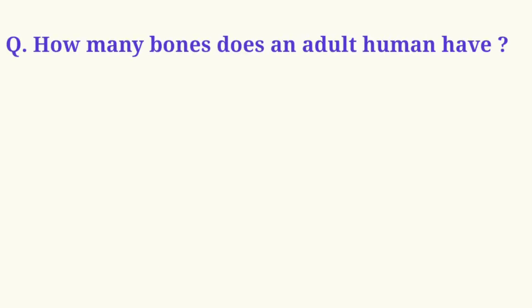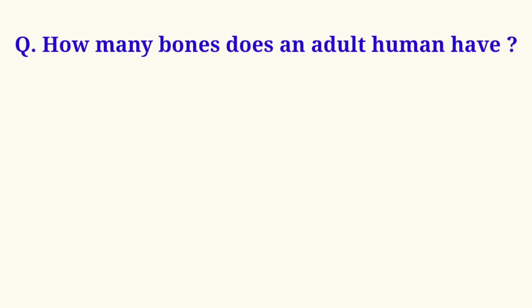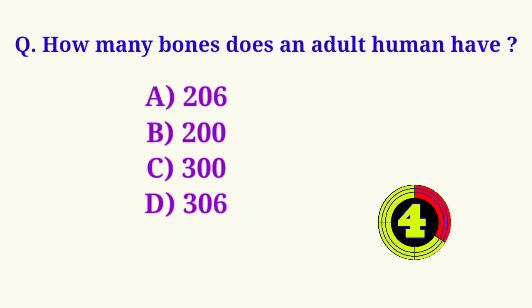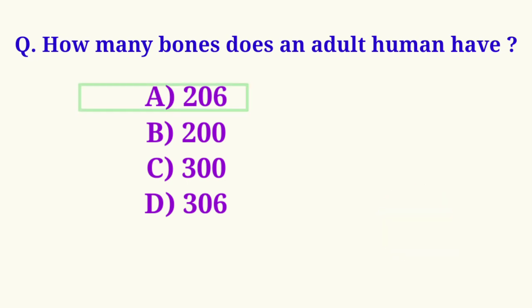How many bones does an adult human have? Option A, 206, is the correct answer.